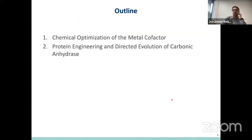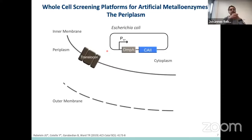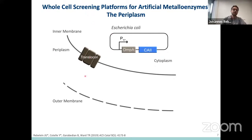On these two points I want to focus for the rest of this talk. First, I'm going to talk about the chemical optimization of the metal cofactor, and in the second part, about protein engineering and directed evolution of our protein scaffold carbonic anhydrase. We are very much interested in using artificial metalloenzymes in a cellular environment, and in order to improve them, we first of all need a screening. Here I've established a whole cell screening which compartmentalizes our artificial metalloenzymes in the periplasm of E. coli — between the outer and inner membrane.